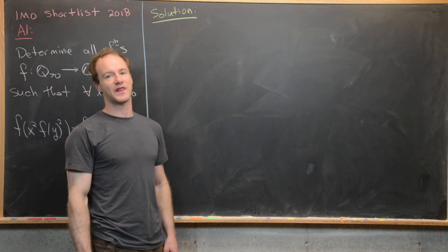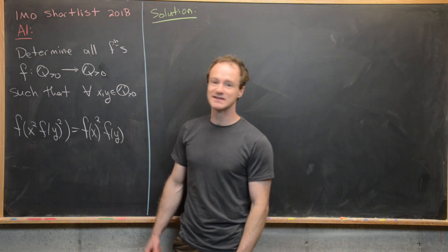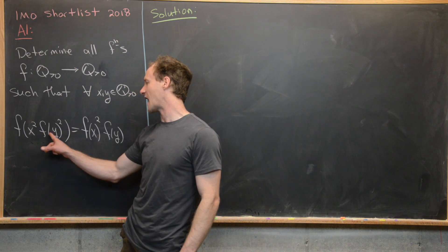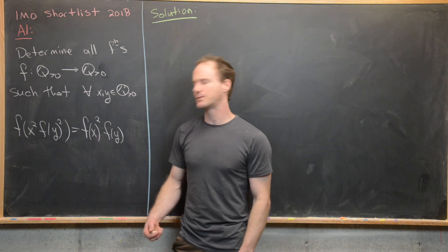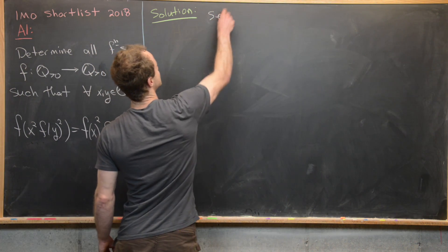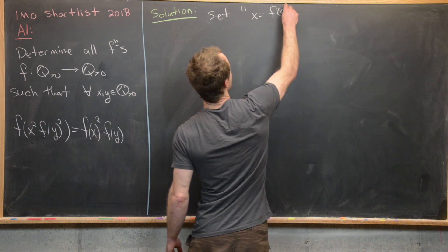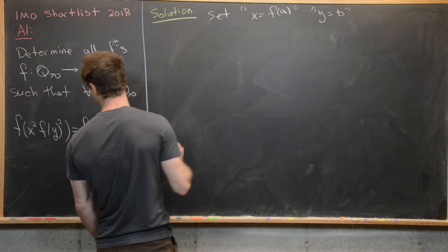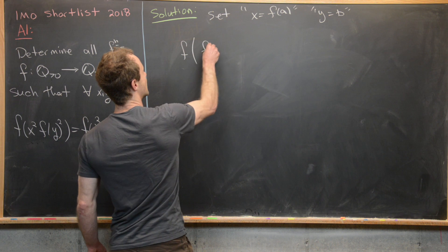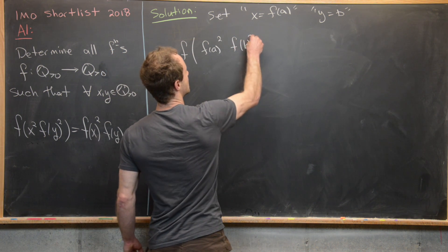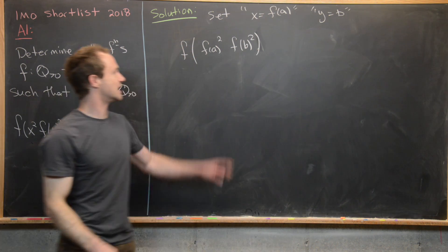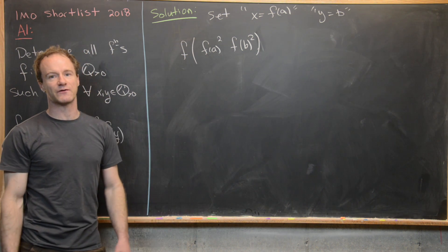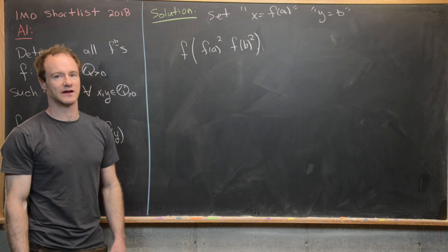Now we're going to look at a solution. We want to homogenize the left-hand side of the equation — make the two inputs on the left-hand side look similar. We can do that by setting x equal to f(a) and y equal to b. That turns the left-hand side into f of (f(a))² times (f(b))², so both inputs inside f look like values of the function squared. That's what I mean by homogenizing the left-hand side.